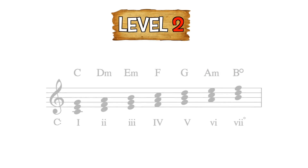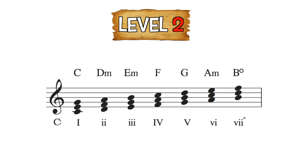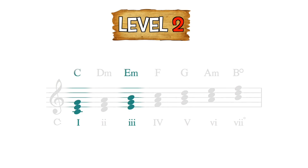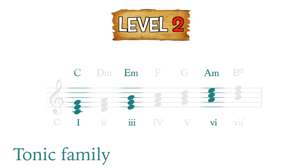In level 2 we will use all the seven diatonic chords in the key of C. A tip is to divide these seven chords into chord families. The I, III, and VI chords belong to what I call the tonic family of chords, because they share common notes and can be exchanged with one another.